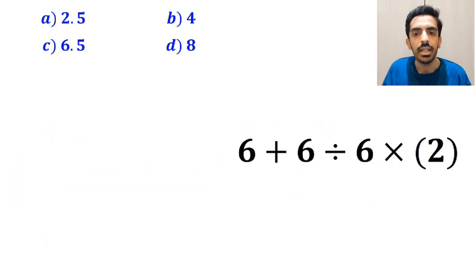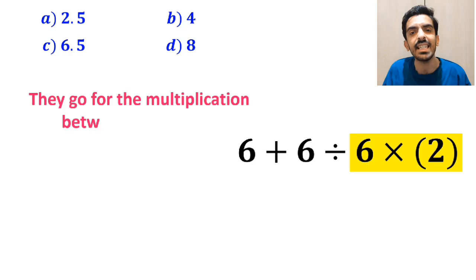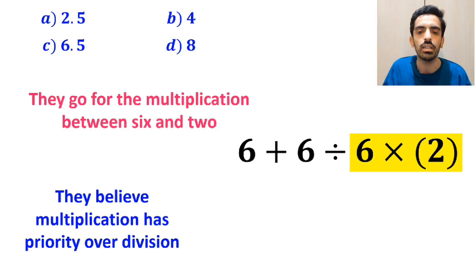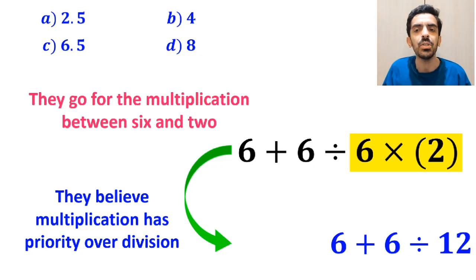In the next step, they go for the multiplication between 6 and 2 because they believe multiplication has priority over division. So, this expression simplifies to 6 plus 6 divided by 12.